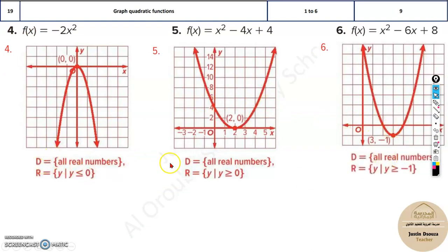Similarly the next problems, you can check. Over here, see, all the domains are real numbers, but the ranges vary. The range over here is greater than or equal to 0. Over here it's less than or equal to 0. Over here it's greater than or equal to 1.